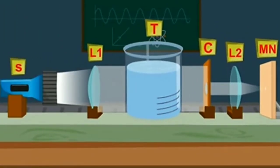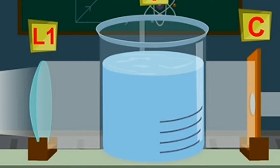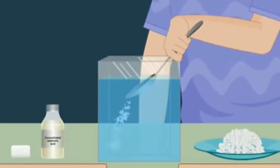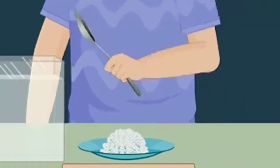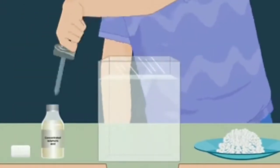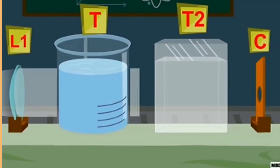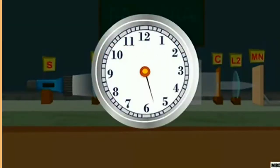Now we add sodium thiosulphate into the beaker along with some drops of H₂SO₄ (sulfuric acid). The sodium thiosulphate and H₂SO₄ have been added. We then place this container between the beaker and the screen so the light passes through the colloidal solution and reaches the screen.